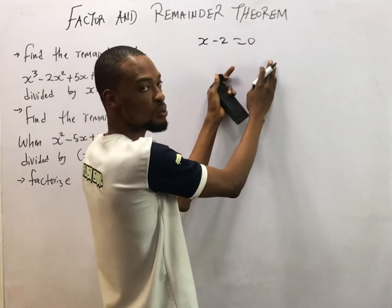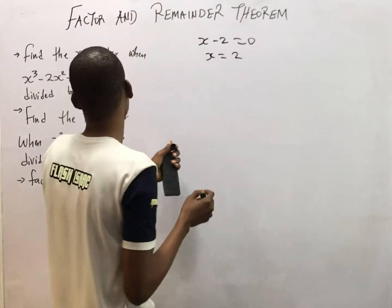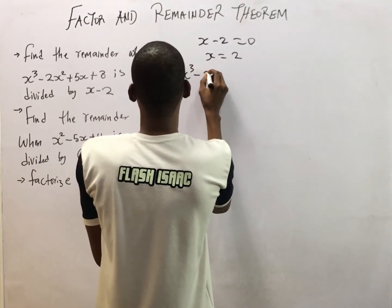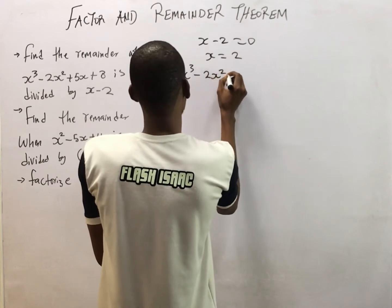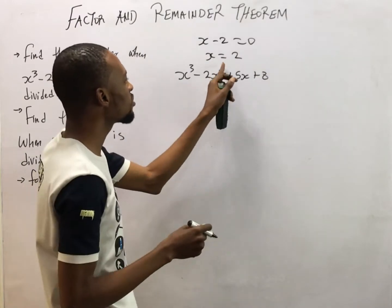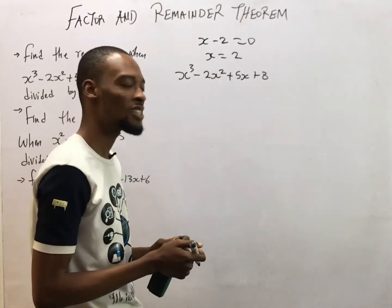If S minus 2 is 0, therefore S is equal to 2. And the polynomial is S raised to the power of 3 minus 2S squared plus 5S plus 8. Simply substitute 2 anywhere you see S. That's how you do it.